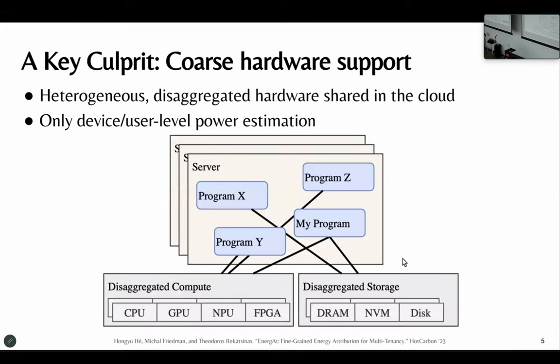So one of the primary constraints is the coarse hardware support we're having. Heterogeneous or even disaggregated hardware is increasingly shared by many tenants in the cloud. But these devices don't natively support software or task-level energy attribution. For example, we have the CPU with RAPL parameters as previously introduced by previous speakers. We have NVML on GPUs and XPE from Xilinx for FPGAs.